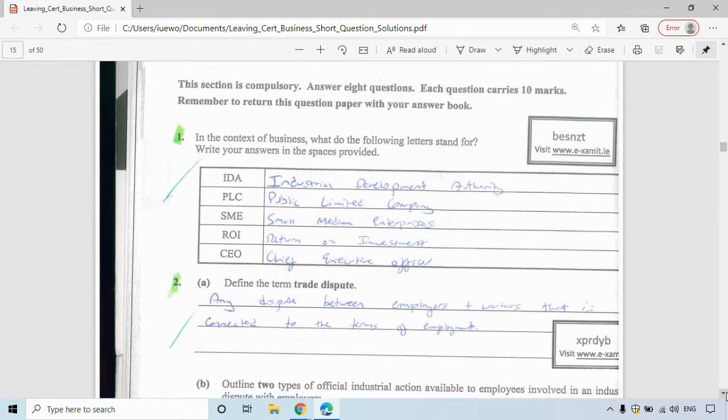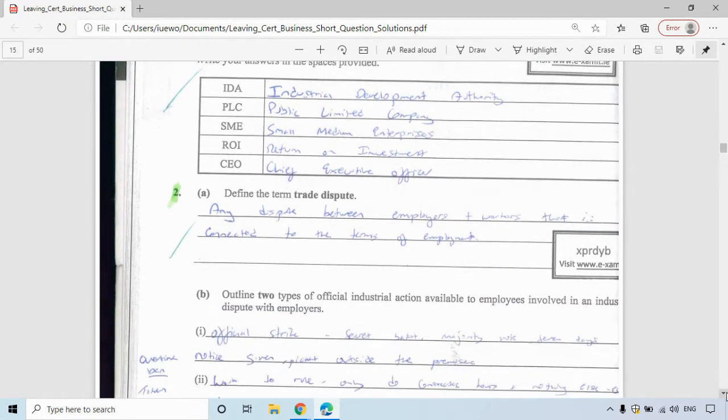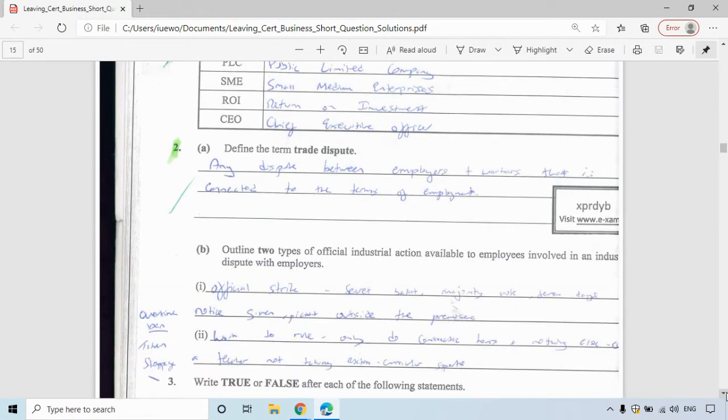Question two is from the industrial relations chapter in unit one. You have to define the term trade dispute. This is any dispute between employers and workers that is connected to the terms of employment or the contract of employment.